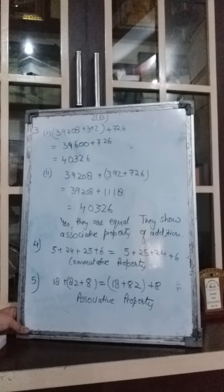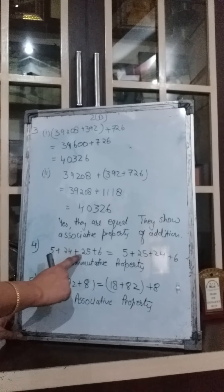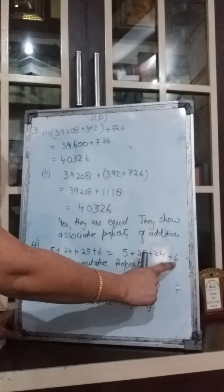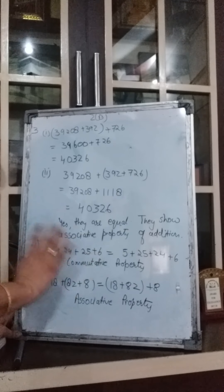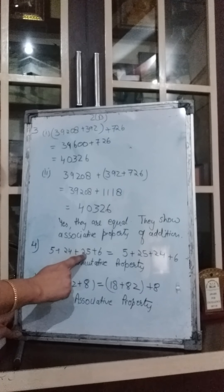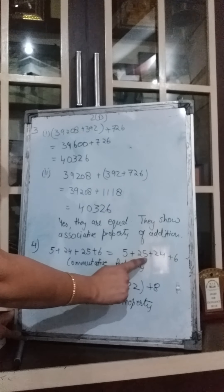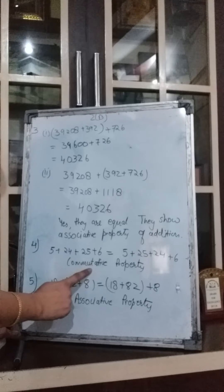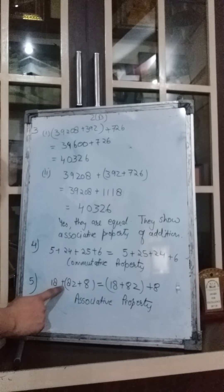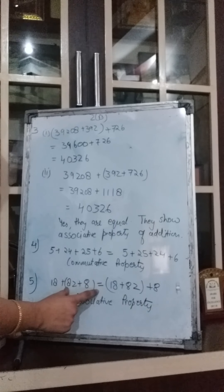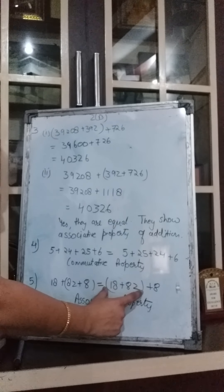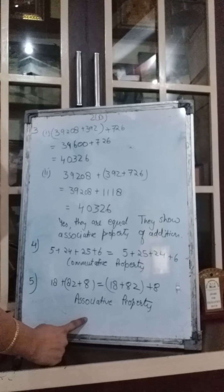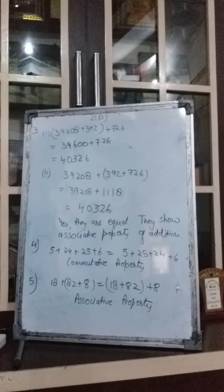Now the fourth question: 5 plus 24 plus 25 plus 6 equals 5 plus 25 plus 24 plus 6. Which property does it show? There is no bracket — only 24 and 25 have changed positions. This shows associative property. With this we come to an end of exercise 2B.